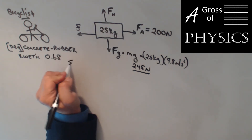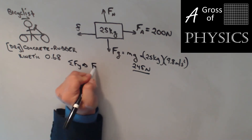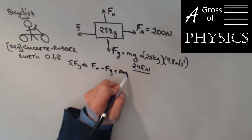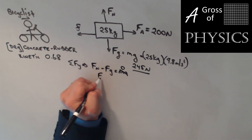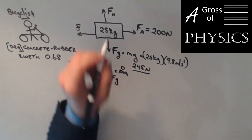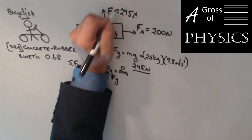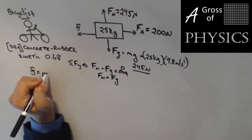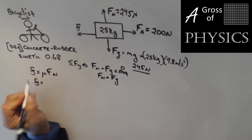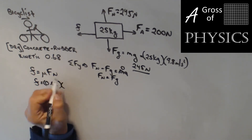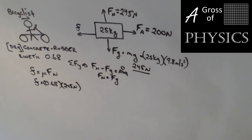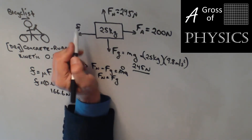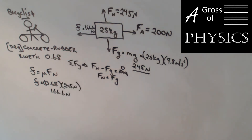Since there are no other forces in the y direction, the sum of forces in y equals Fn minus Fg equals ma. The bike isn't floating or sinking, so acceleration in y is zero, meaning the normal force and gravity are equal: Fn equals 245 newtons. Now knowing the normal force, we can find friction: friction equals mu times Fn equals 0.68 times 245 newtons, which gives 166.6 newtons.